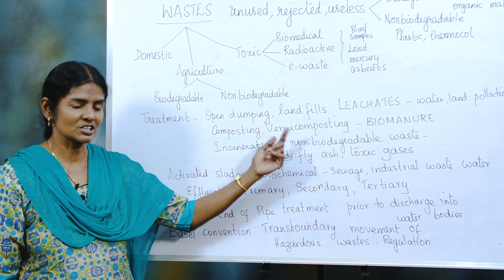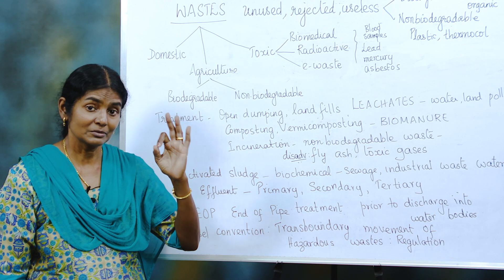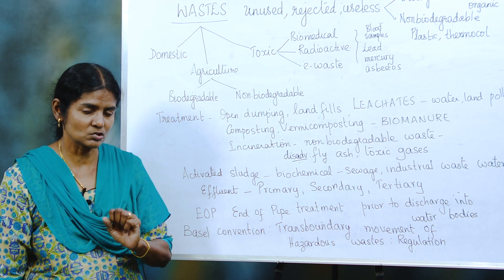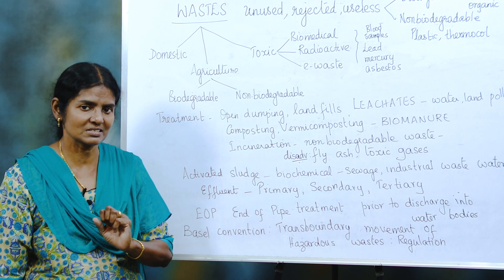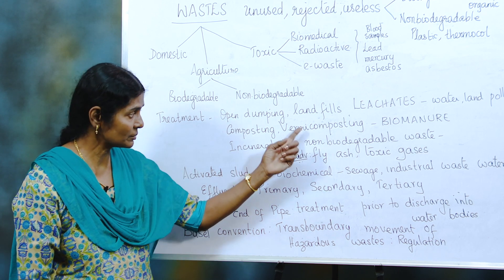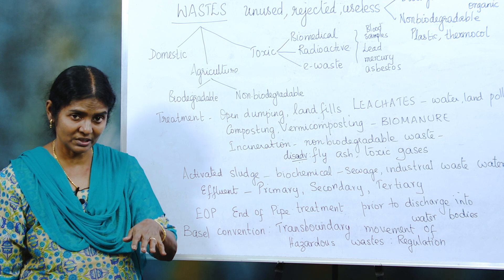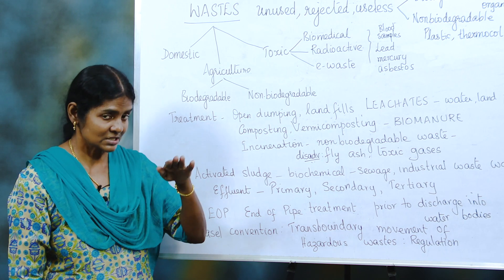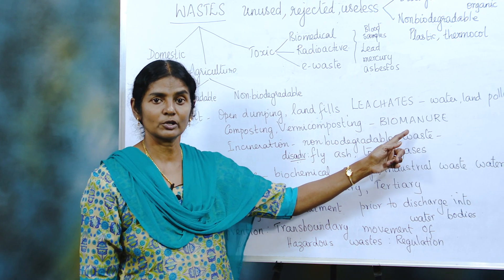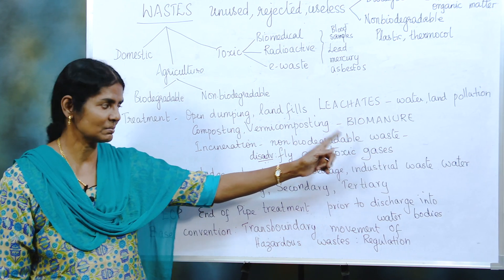Composting and vermicomposting is the best method for all biodegradable waste. When we take kitchen waste, we can compost it or vermicompost it with the help of small worms. It is biodegraded by microbes and broken down, and the final product is biomanure, which is very safe and good for plants.